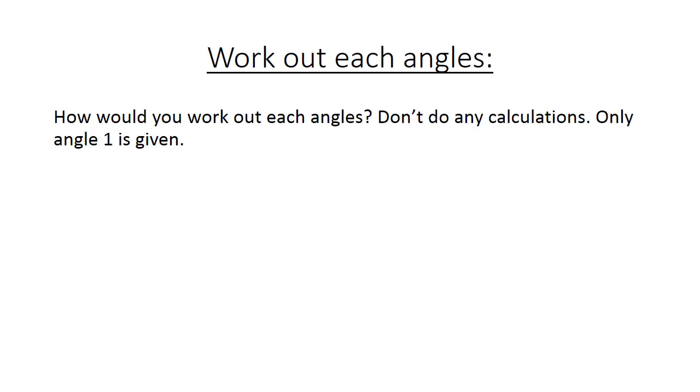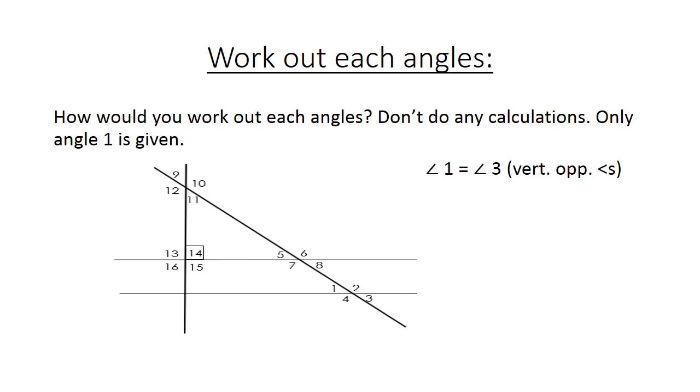Now you have to work out angles. How would you work out each angle? Don't do any calculations. Only angle 1 is given. Now we are going to start. Angle 1 equals angle 3, vertical opposite angles. Then we have angle 1 equals angle 8, alternating angles. And we have angle 8 equals angle 5, vertical opposite angles.